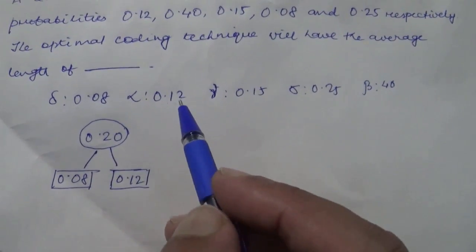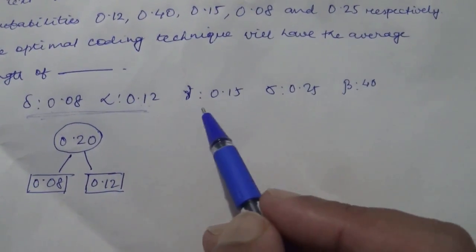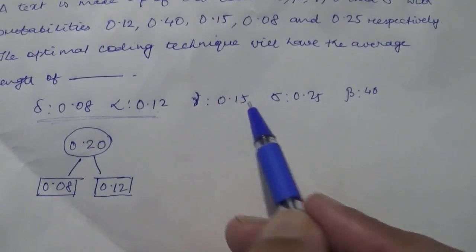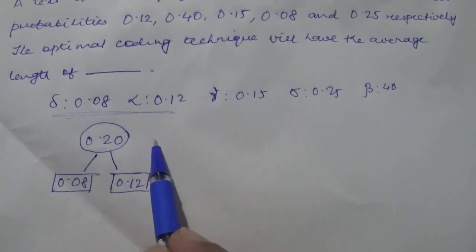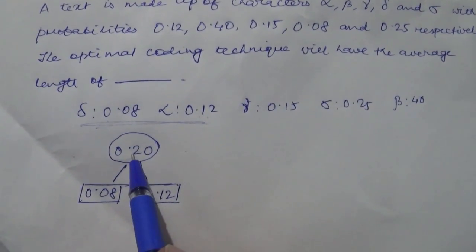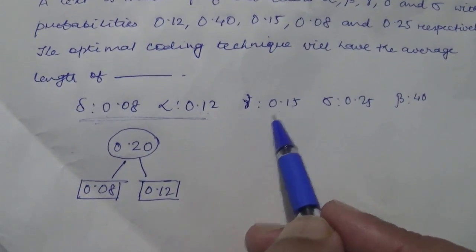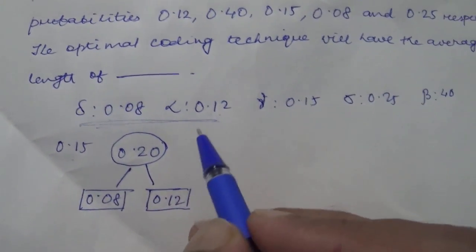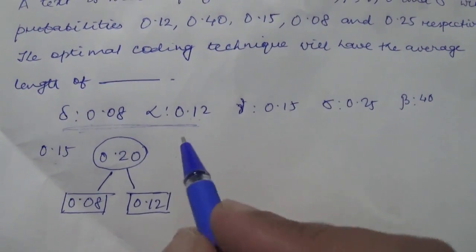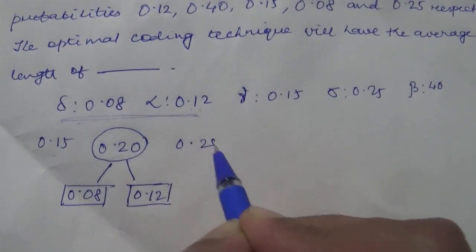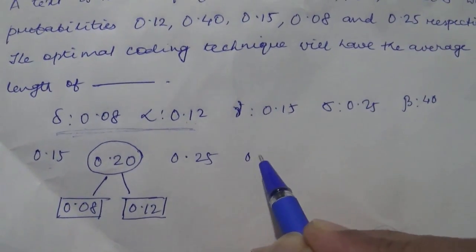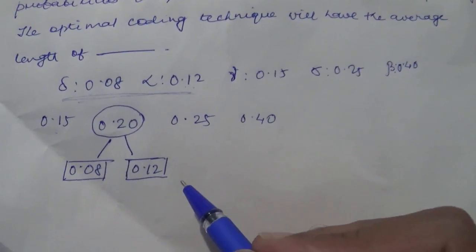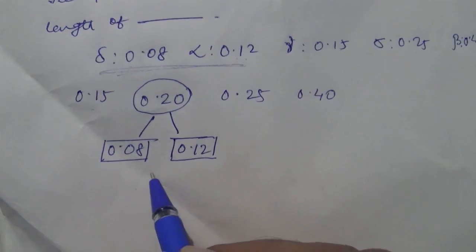These two have been used already. From the remaining values, 0.15 will not be on the right-hand side but on the left-hand side because it is lesser than 0.20. So 0.15 comes before 0.20. The next value 0.25 is greater than 0.20, so the order is 0.15, 0.20, 0.25 and 0.40. This is your Figure A.